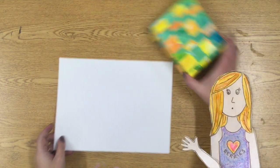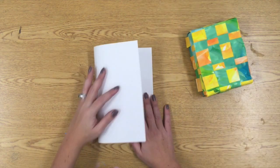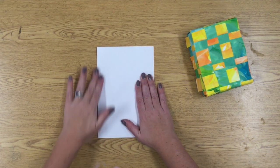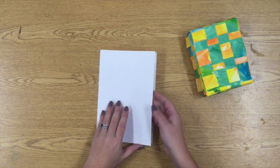So here we go. Take a piece of paper and fold it in half hamburger style. Make sure you line up your corners and really crease that edge.